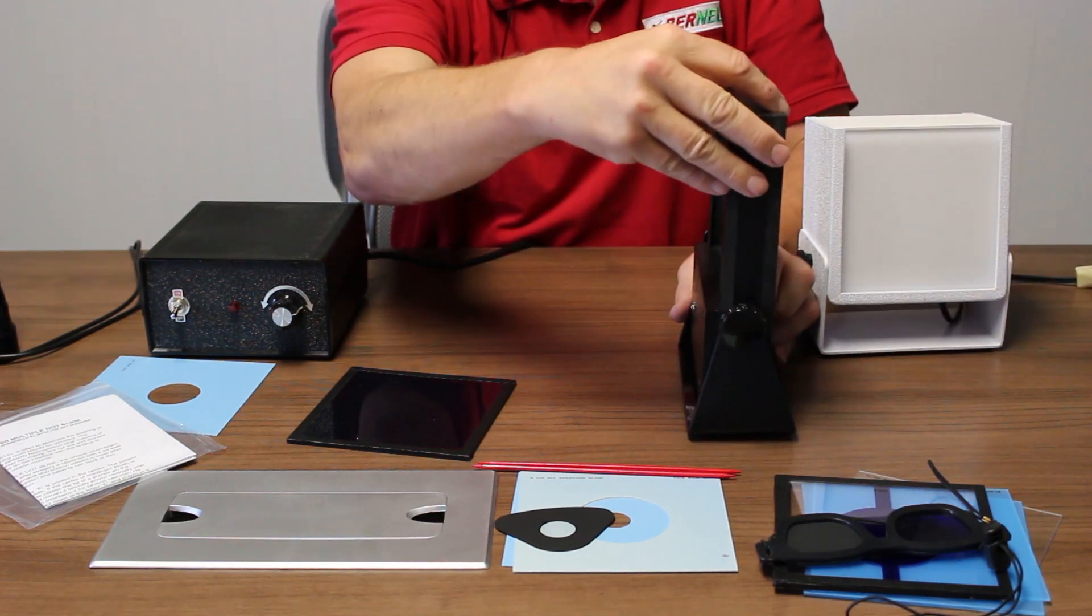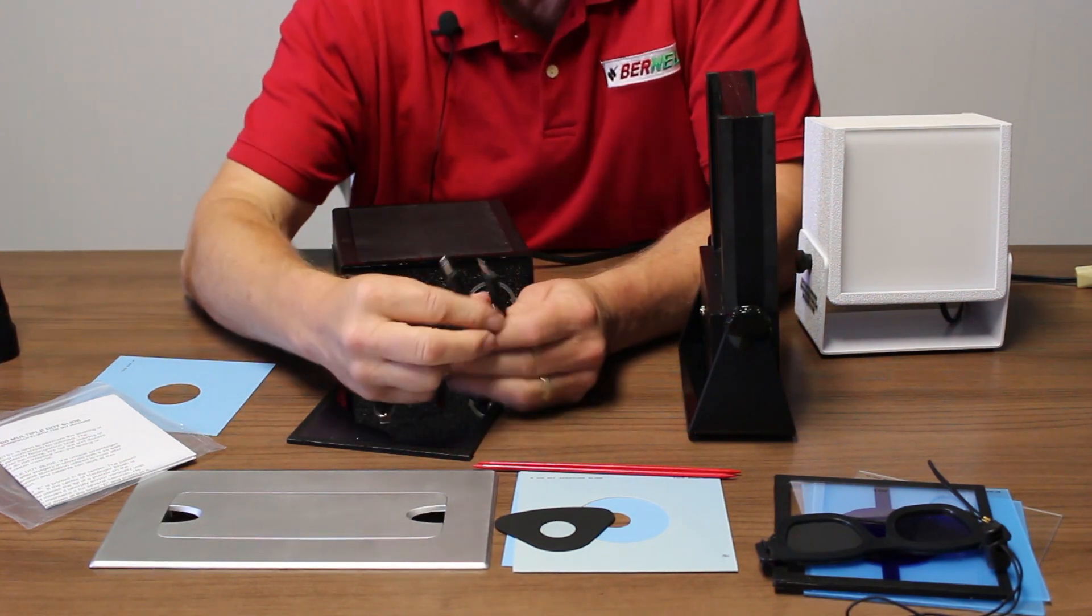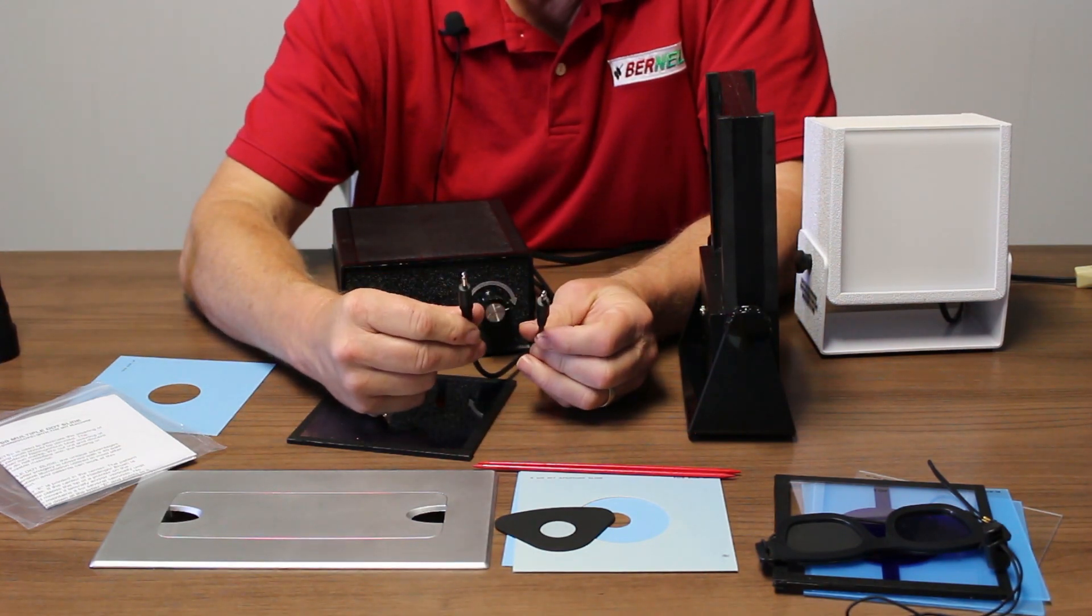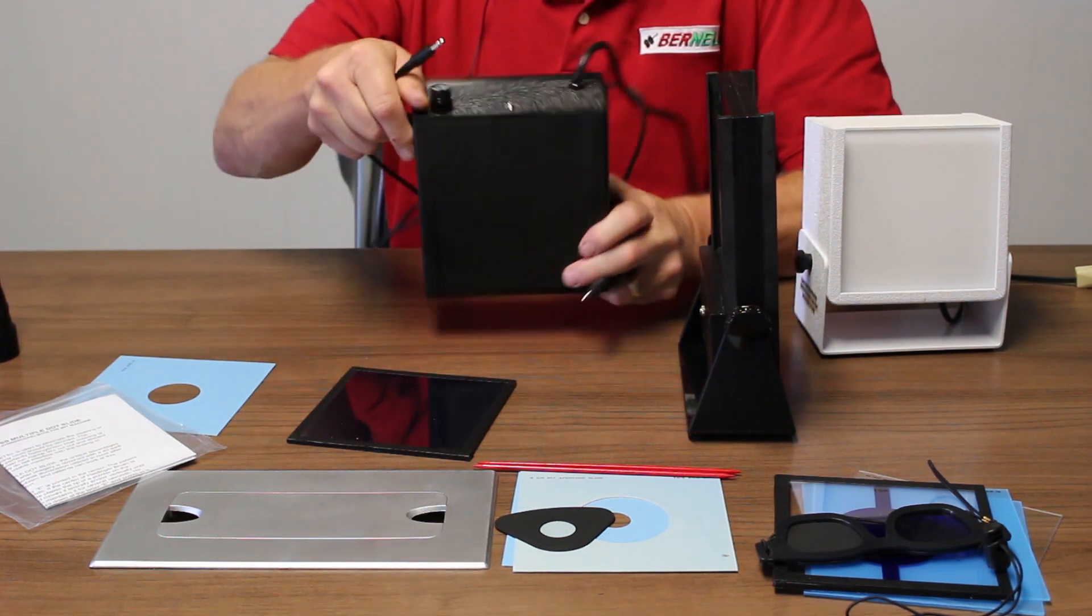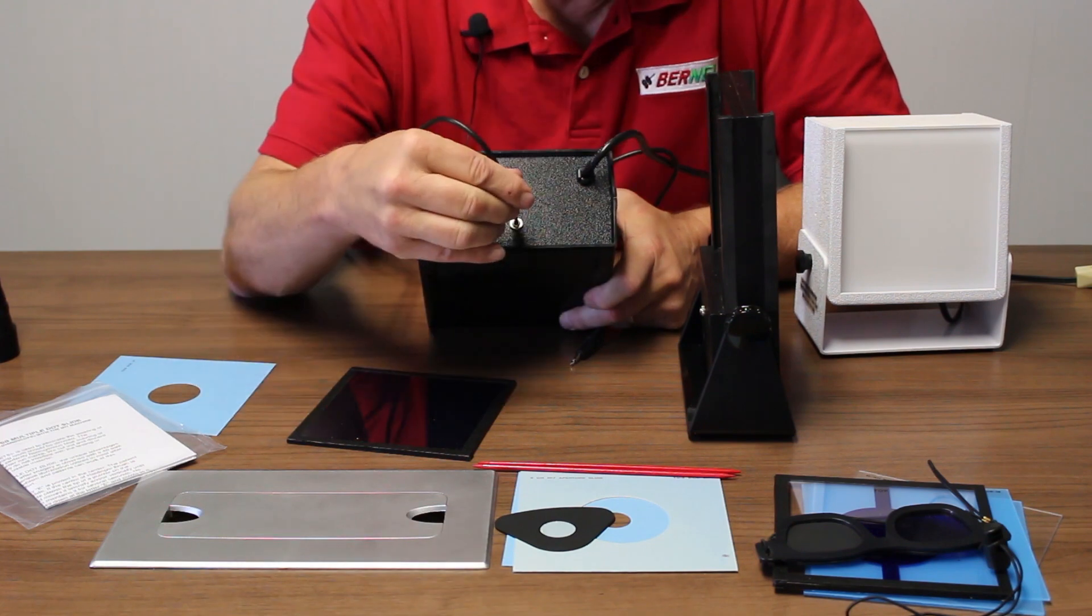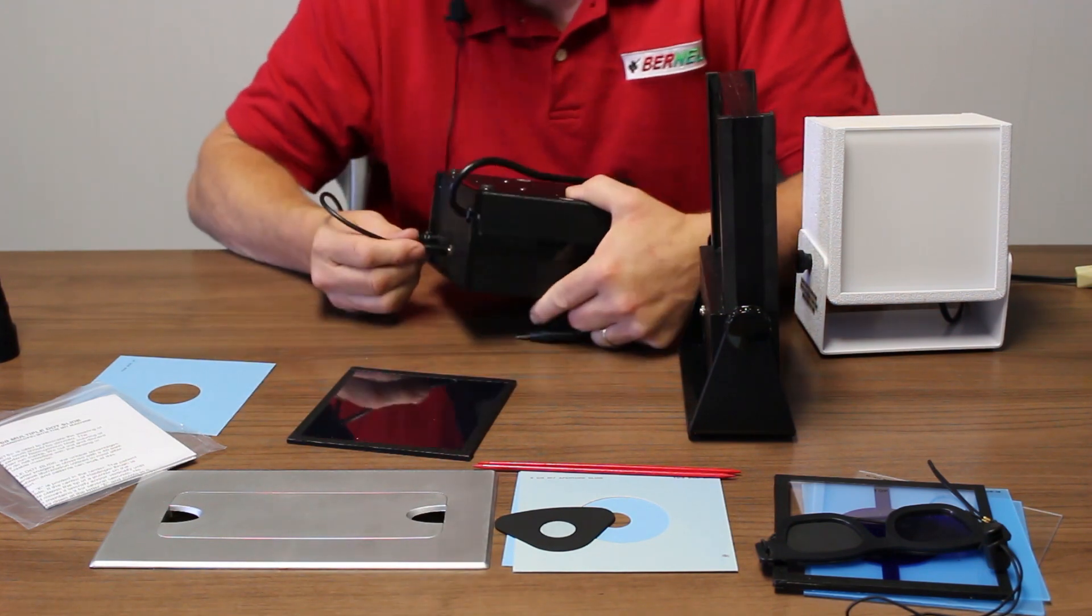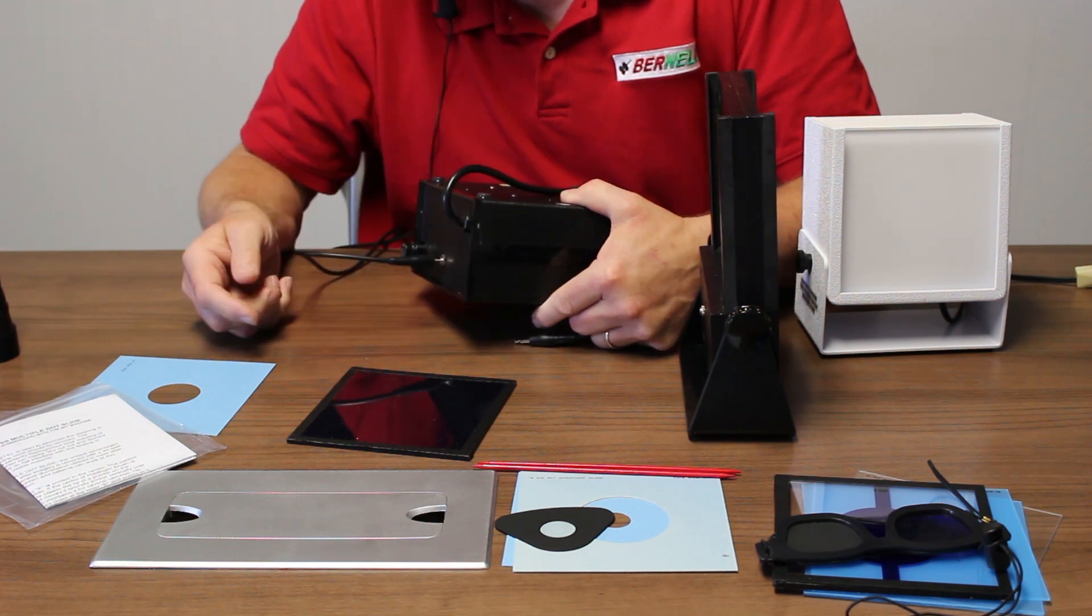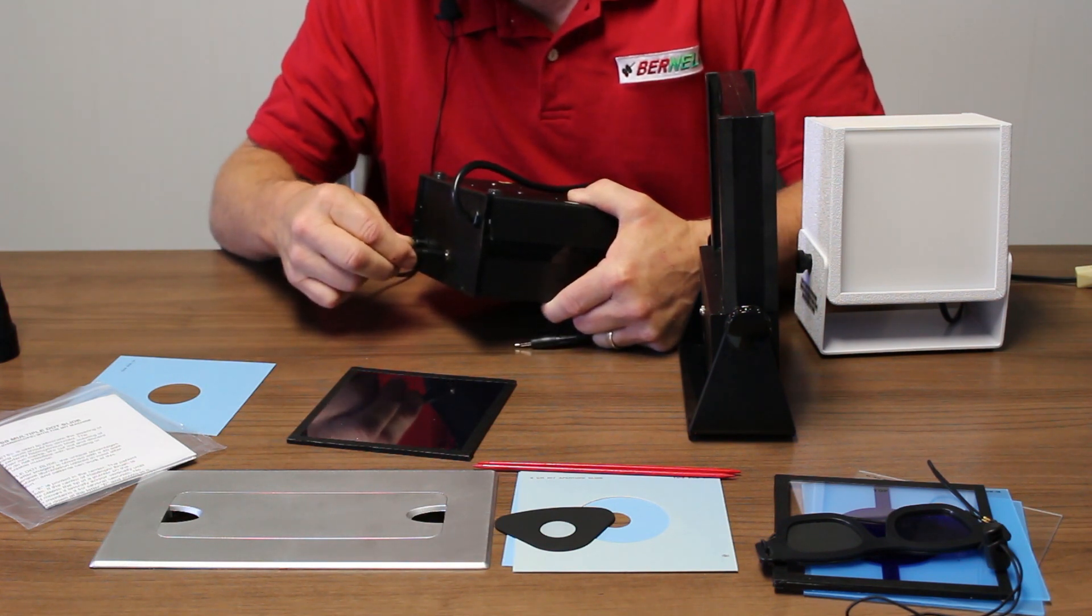Once you have that assembled, grab the power supply cable. Notice this cable is the same on both ends, so it doesn't matter which end you put in which device. There's an RCA-like plug on the back. Make sure you get it all the way in so it's snug. If you only have it part way in, it's not going to make a good connection.